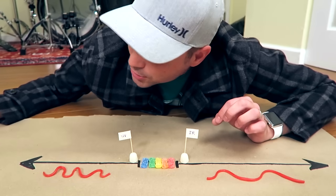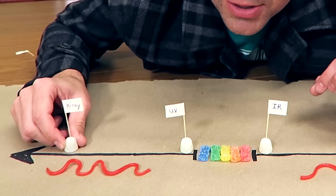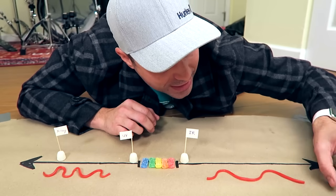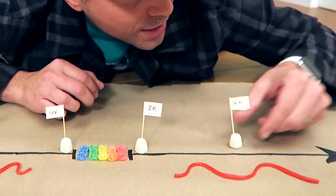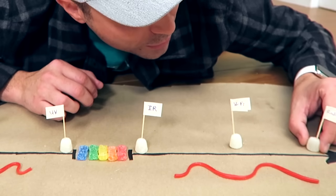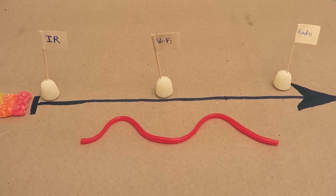And if you keep going on the shorter wavelength side, eventually you get things like X-rays. If you keep going on the long wavelength side, eventually you get things like Wi-Fi, and even radio waves, which can be the length of entire cities.